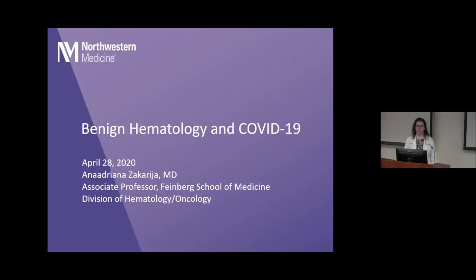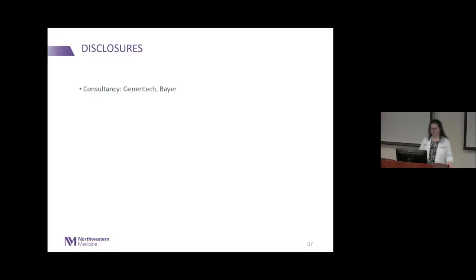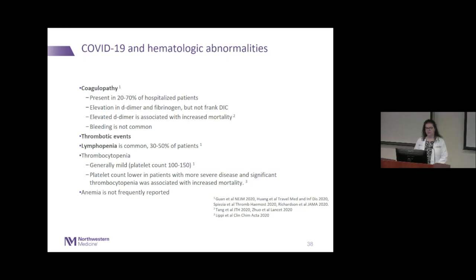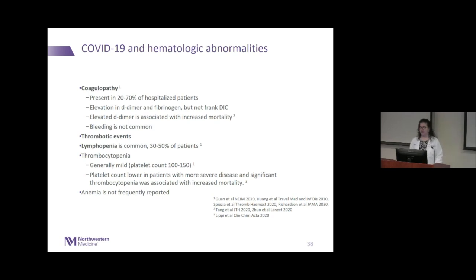Thank you Dr. Manno. On behalf of the benign hematology group here at Northwestern, I'll share our perspectives on hematology and COVID-19. Information is rapidly evolving, but we do know that hematologic abnormalities are a prominent feature of COVID-19 disease. A majority of hospitalized patients present with coagulopathy manifest by elevation in D-dimer and fibrinogen, but most do not have overt DIC — PT and PTT are normal and bleeding is quite uncommon. Thrombocytopenia is very mild, but this elevation in D-dimer has been significant and associated with increased mortality risk.